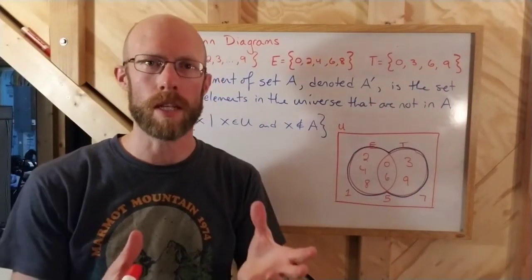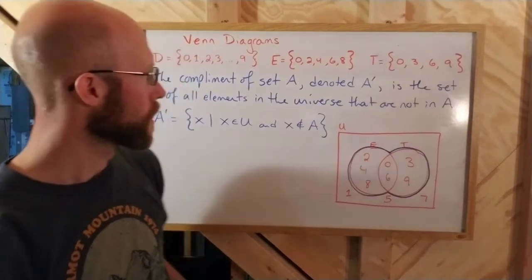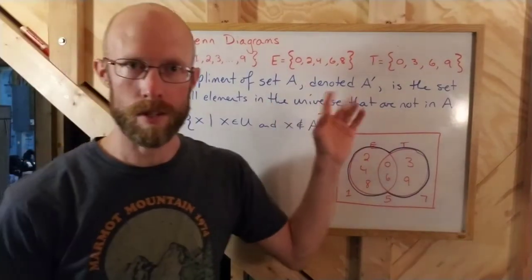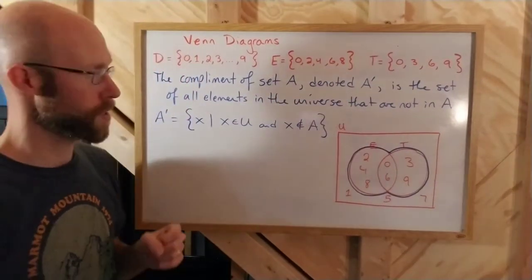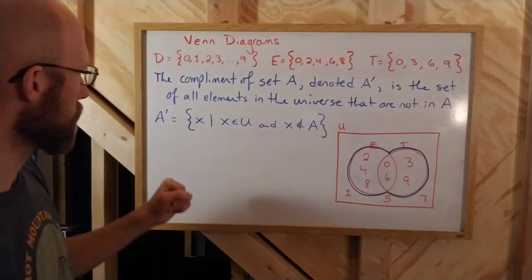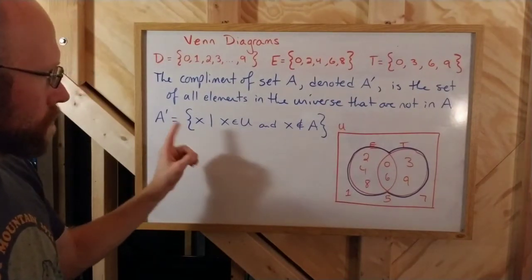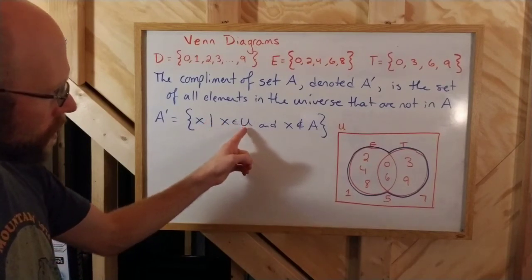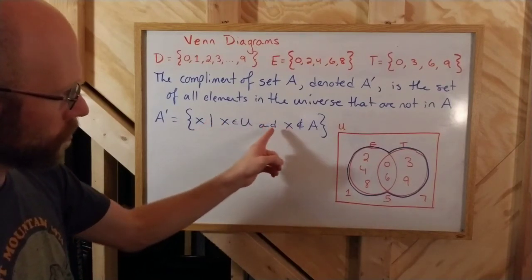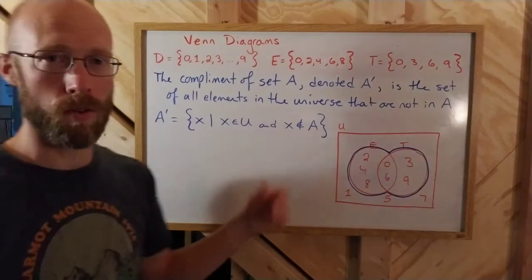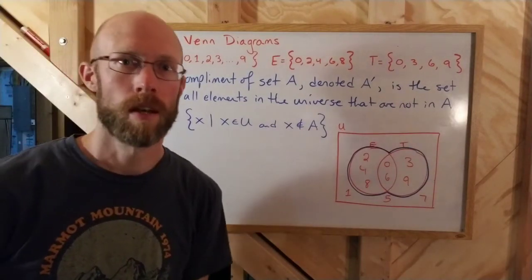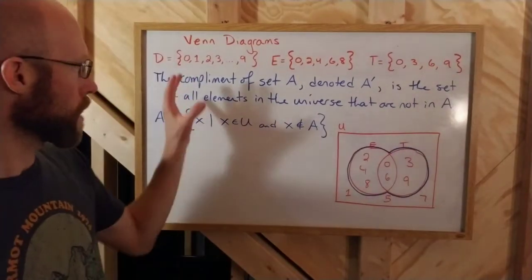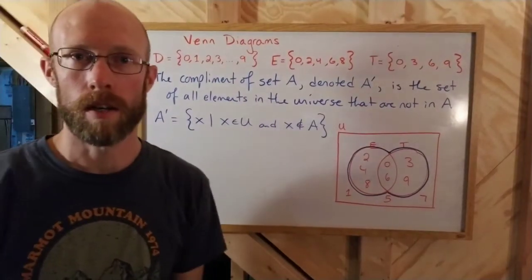So they still have to be in the universe. We'll explore this in a moment with a concrete example. But A prime then is defined in set builder notation as all X's such that X is in the universe, an element of U, and X is not in A, not an element of A. So let's take a look at what that means in our case here.